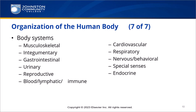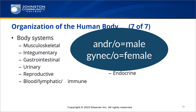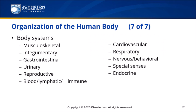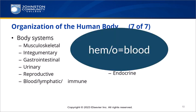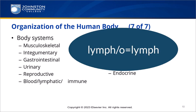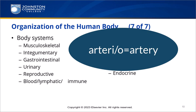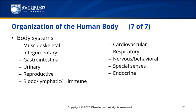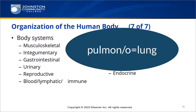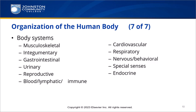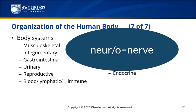The reproductive systems are responsible for keeping our genetic material available through the function of reproduction. Two combining forms you might see are andro, which means male, and gyneco, which means female. The blood, lymphatic, and immune systems are responsible for the transportation of nutrients and waste and protecting the body against disease. Word parts here are hemo, meaning blood, and lympho, meaning lymph. The cardiovascular system serves to transport blood throughout the body — combining form arterio means artery. The respiratory system delivers oxygen to cells and removes carbon dioxide — combining form pulmono means lungs. The nervous system is responsible for the reception and processing of information perceived by the organism — combining form neuro means nerve.